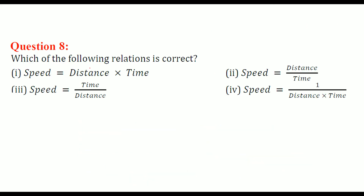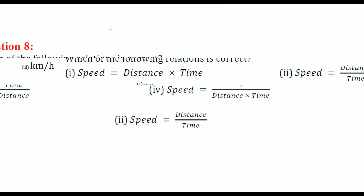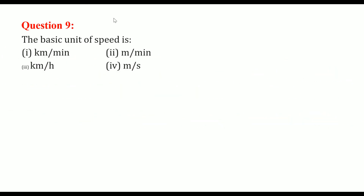Which of the following relations is correct? As mentioned earlier, speed equals distance divided by time. So the second option is the correct one; the others do not fulfill the criteria. The basic unit of speed is meter per second.